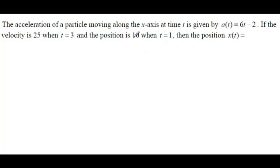So here we go. If the acceleration is 6t - 2, then you take the antiderivative to get up to velocity. That's going to be 3t² - 2t + c.